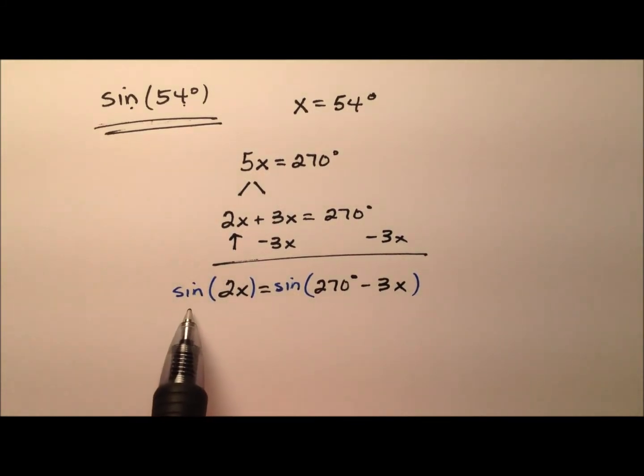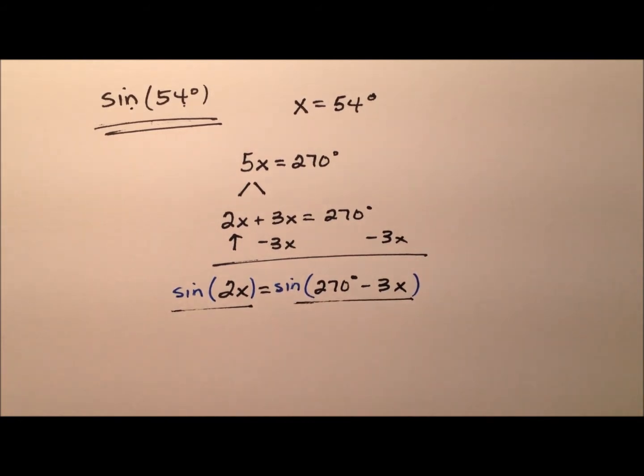So I have a couple of trig identities here that I can use to expand these expressions on either side of the equation. This first one is the double angle for sine, and I can rewrite that as 2 times sine x times cosine x.